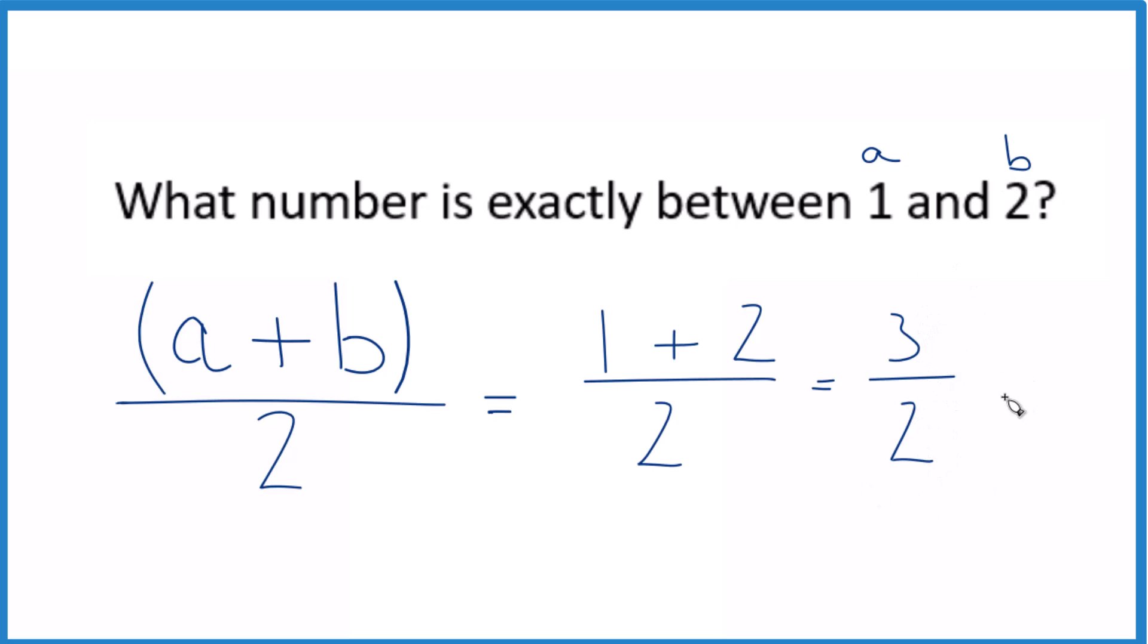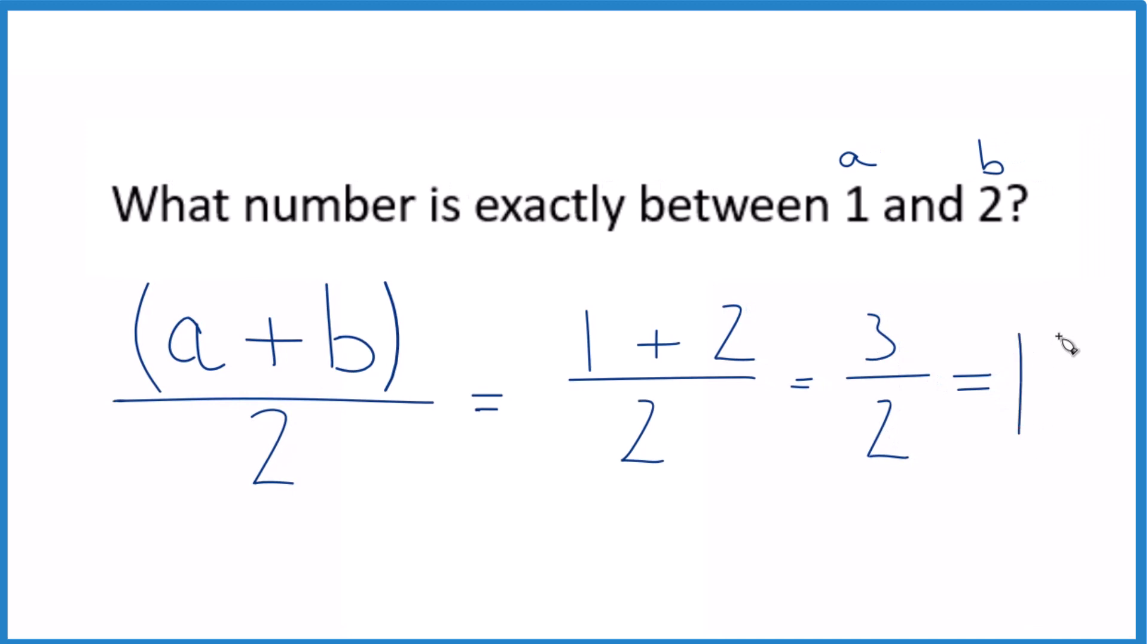This is an improper fraction. You could change it to a mixed number. 2 goes into 3 one time with 1 left over. And we just bring the 2 across. So it's also 1 and a half. So 1 and a half is exactly between 1 and 2.